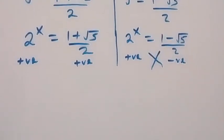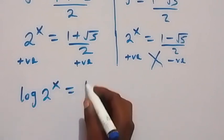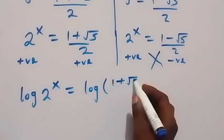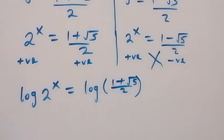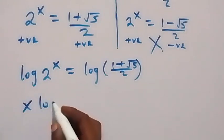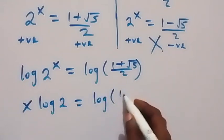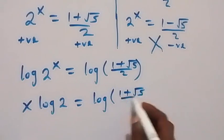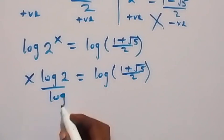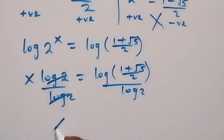On the accepted side, we can take the log on both sides. We have log of 2 raised to the power x equals to log of 1 plus root 5 over 2. We apply the power x to the front, so we have x log 2 equals to log of 1 plus root 5 over 2. From here, we can divide both sides by log 2.